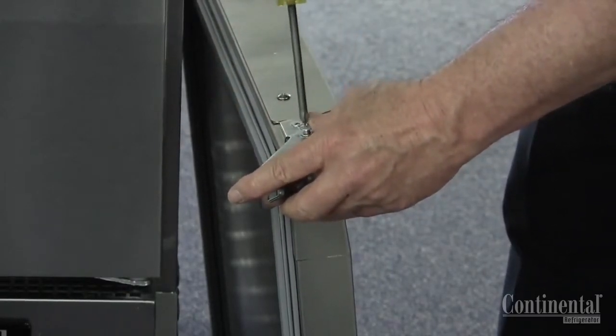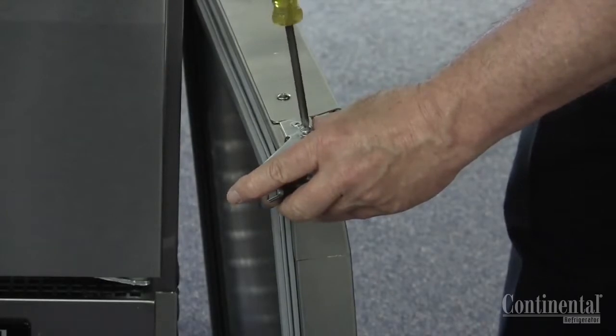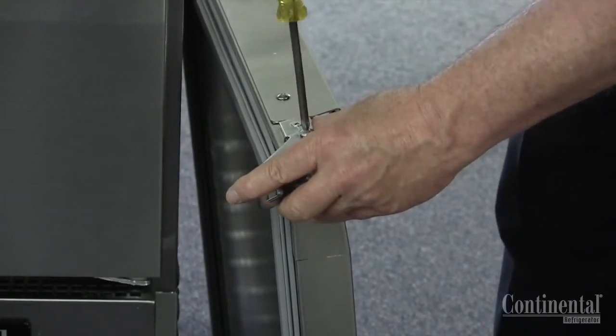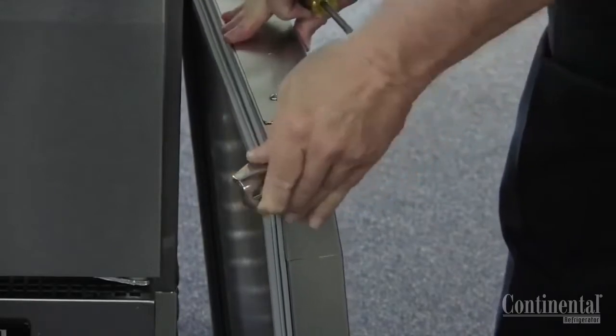Once the screw is inserted into the top of the hinge, again, close the hinge bracket so that it snaps with force towards the door.